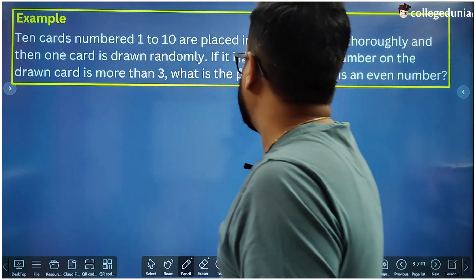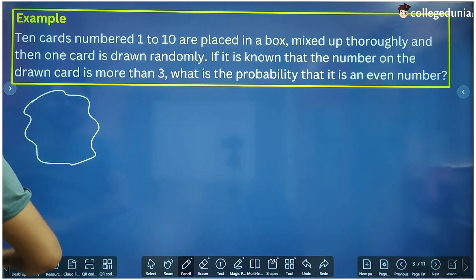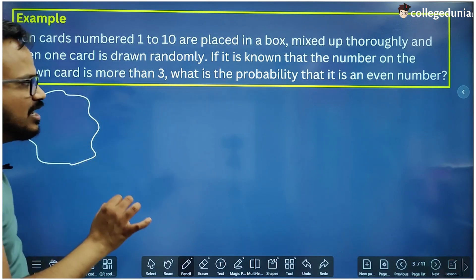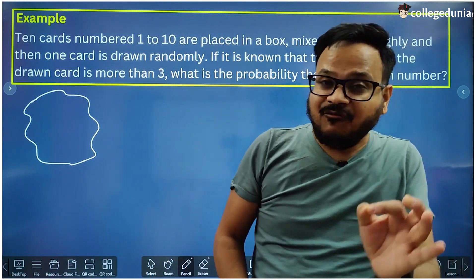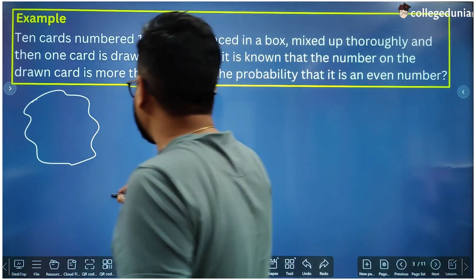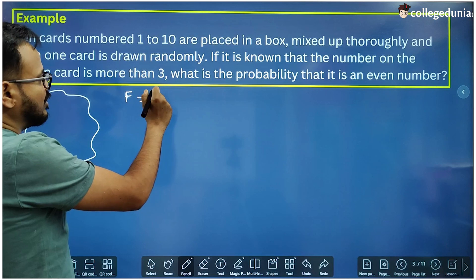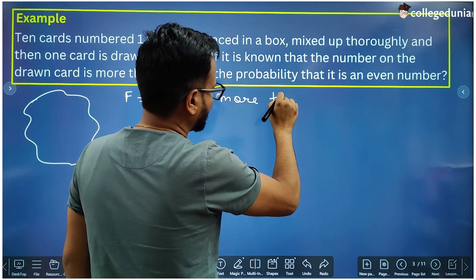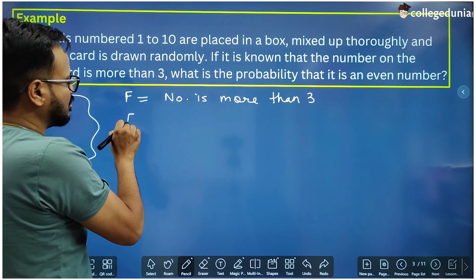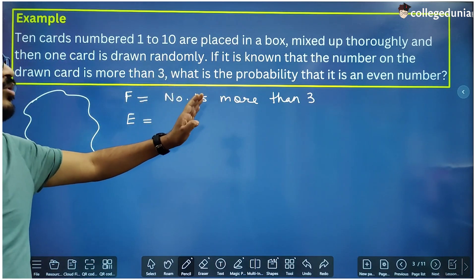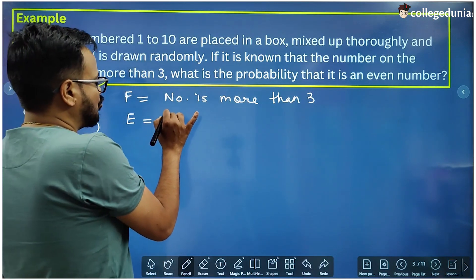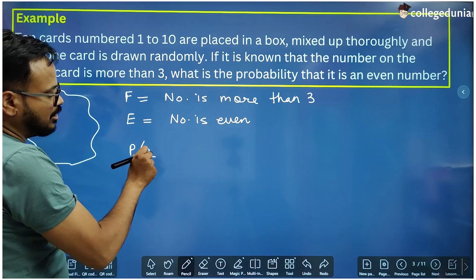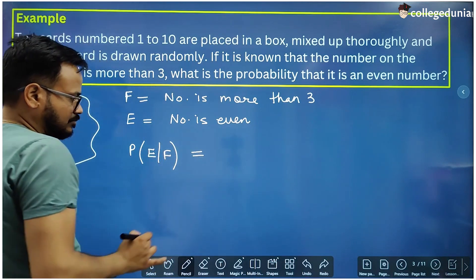Next question: 10 cards numbered 1 to 10 are placed in a box and mixed up thoroughly. One card is drawn randomly. If it is known that the number on the drawn card is more than 3, what is the probability that it is an even number? The event F (which has already occurred) is: number is more than 3. Event E (whose probability is to be calculated) is: number is even.